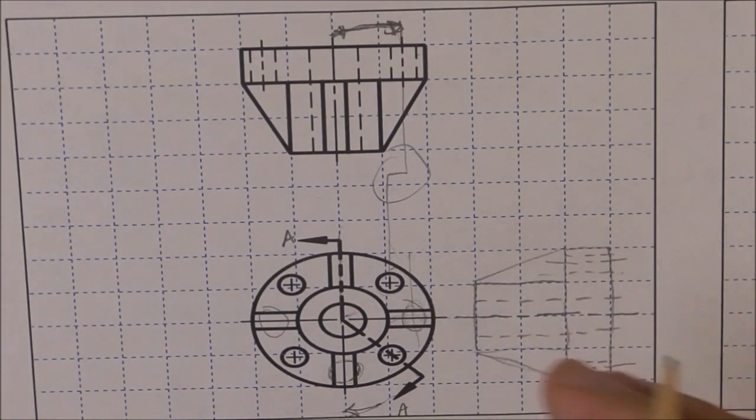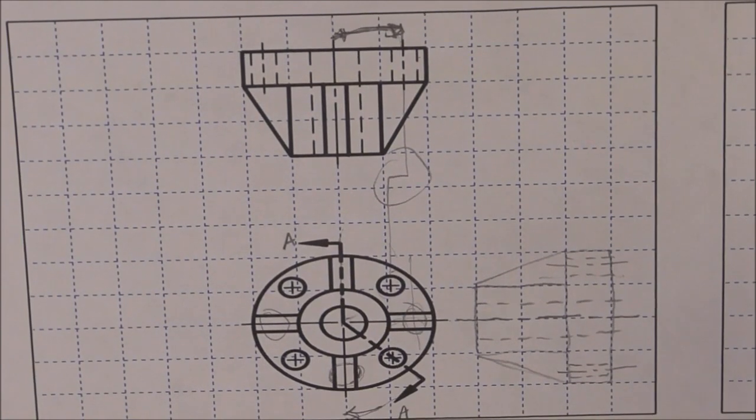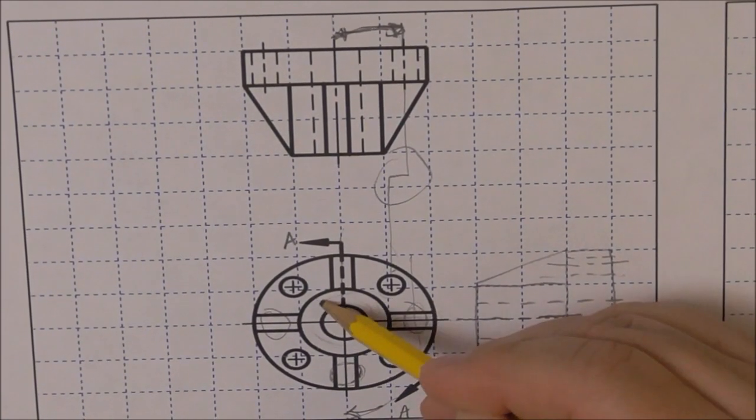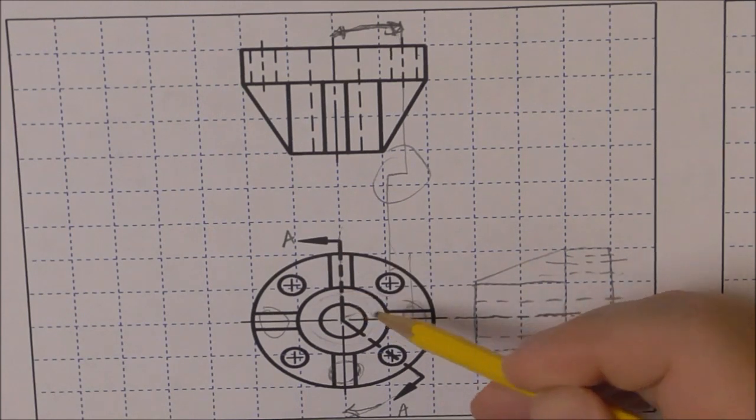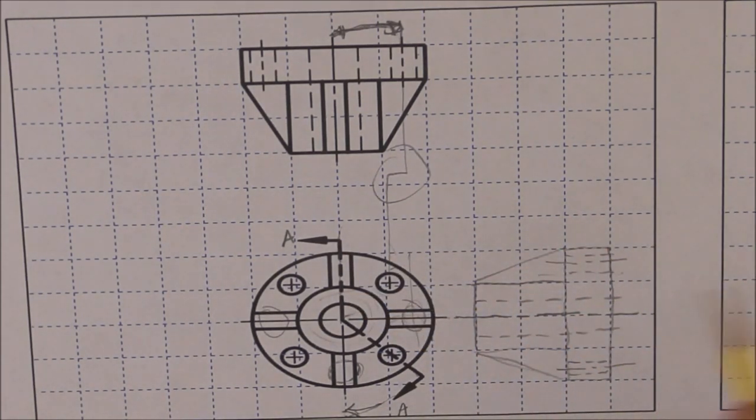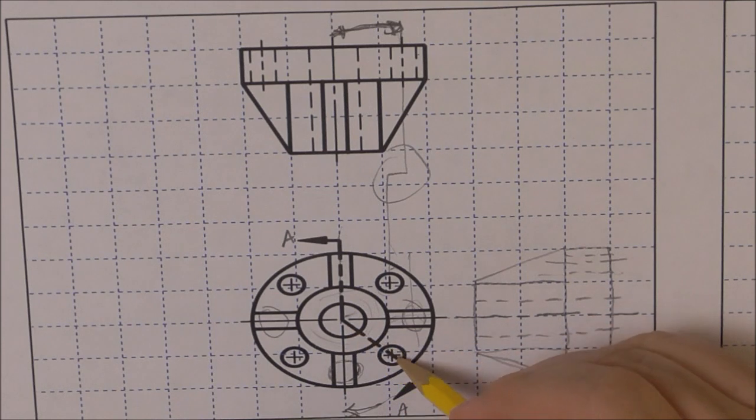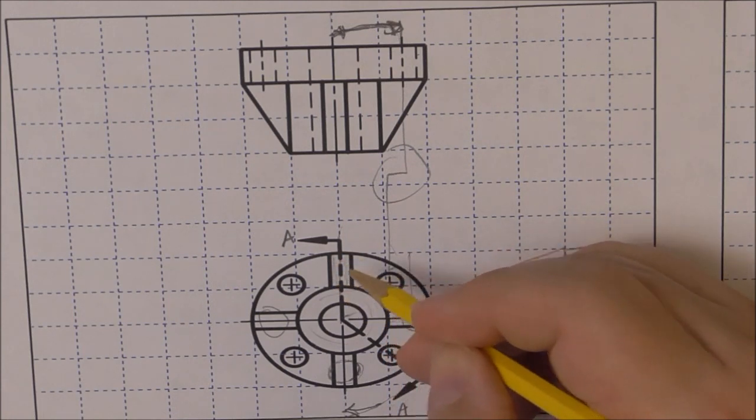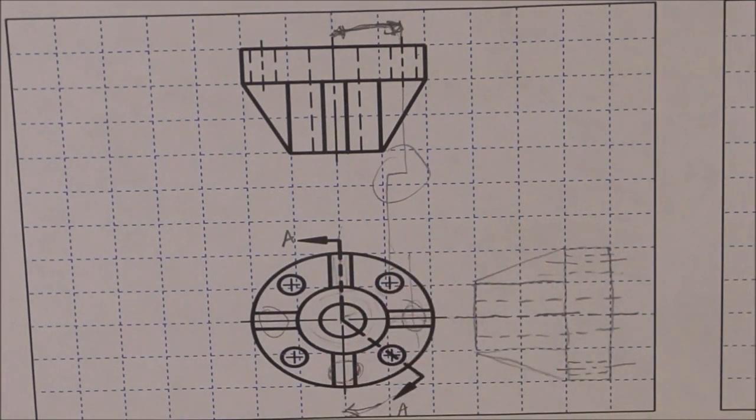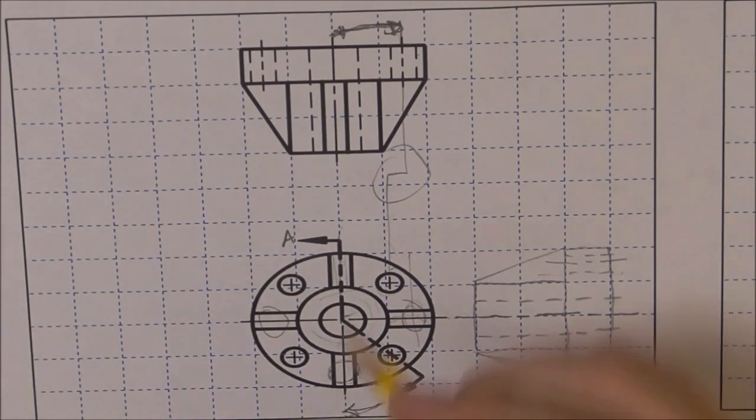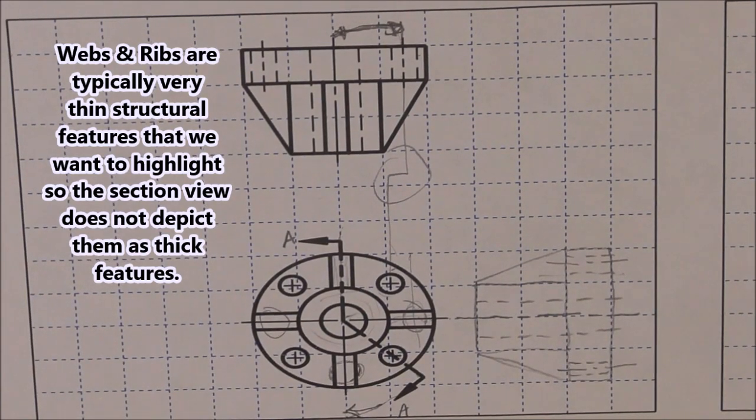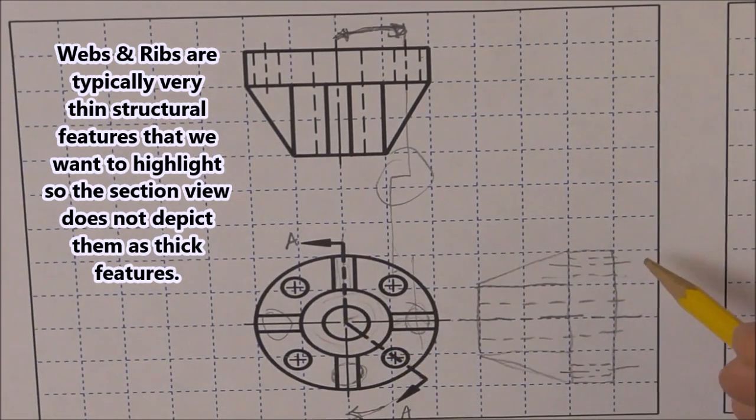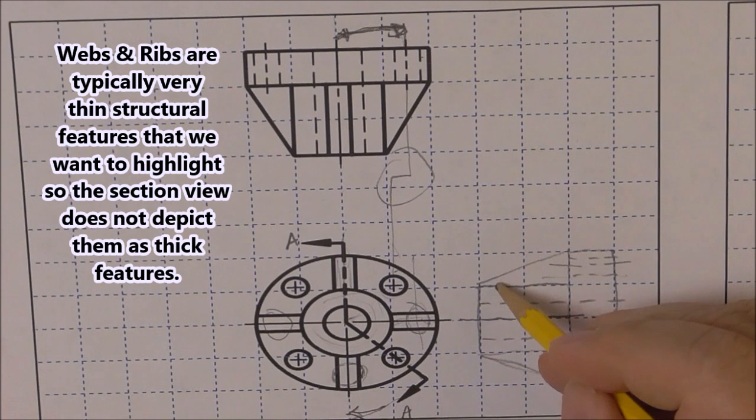Now we're going to turn it and change it into a section view. So we're cutting through the cylinder here, we're cutting through the base in the top half here, and in the bottom half we're cutting through the hole but not through this webbing. Now I'm going to assume that this is a web. A web or a fin, we display it a little bit different in a section view.